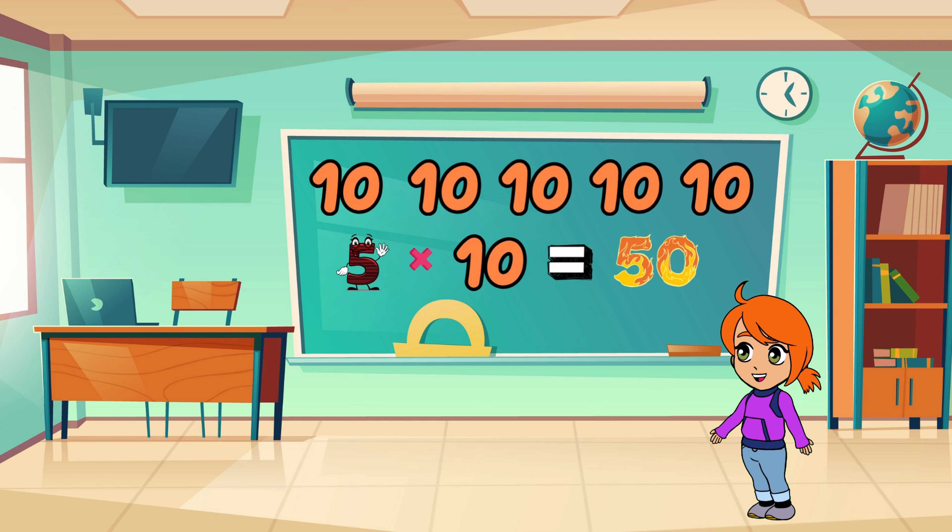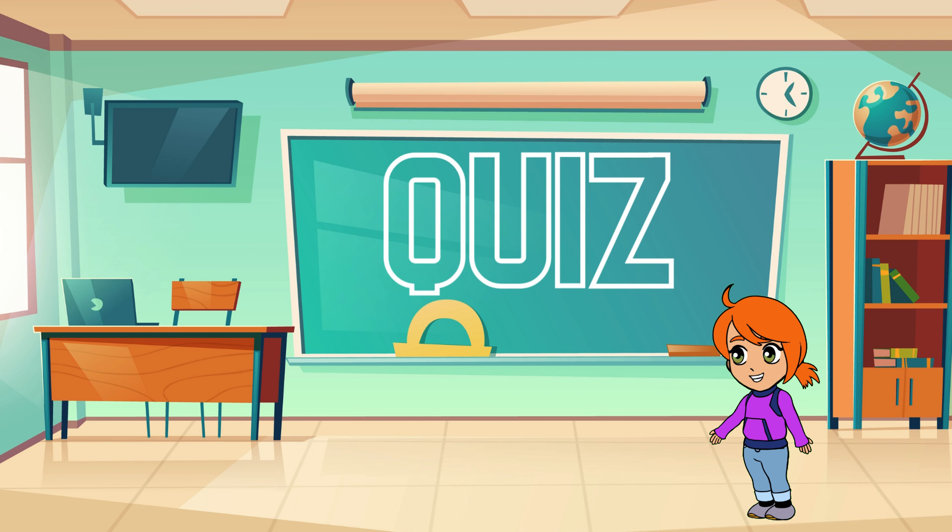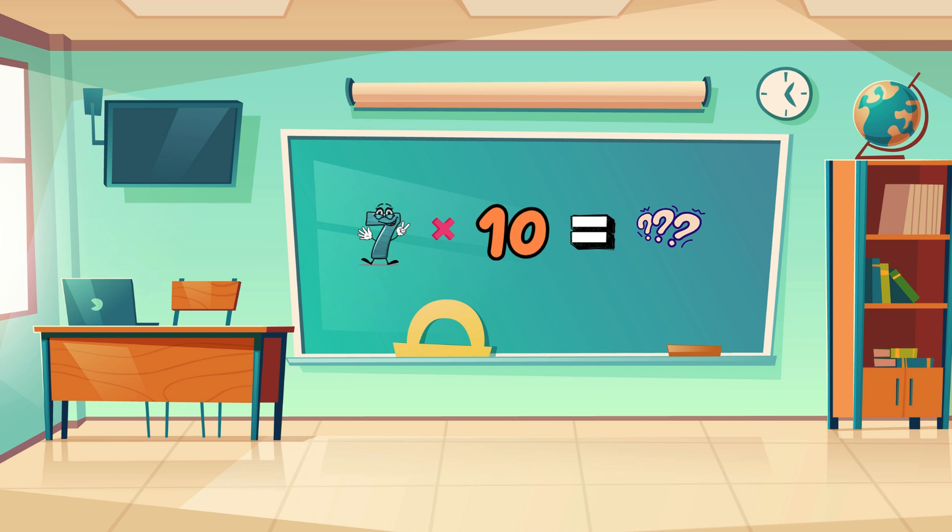Okay, here's a quick quiz for you now. What's 7 times 10? That's right, it's 70! You all are doing amazing.